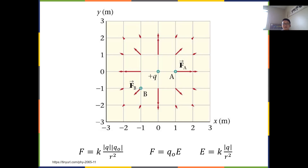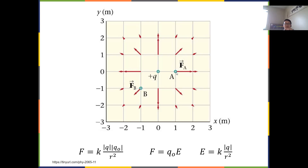Just as F = m·g gravitationally, for electric force we write F = q₀·E, where q₀ is the test charge and E is the electric field. Comparing with Coulomb's law — F = kq·q₀/r² — we get E = k|q|/r². Here r is the distance from the source charge to the point of interest.